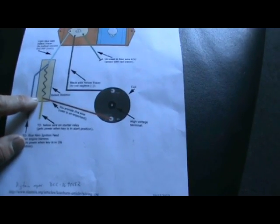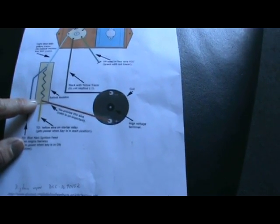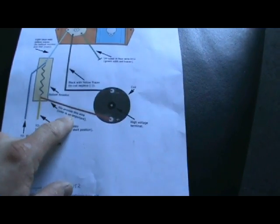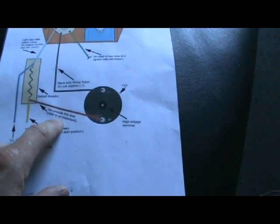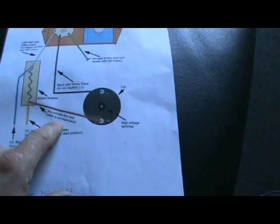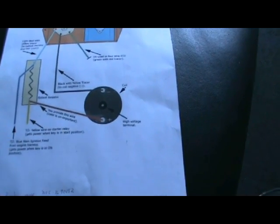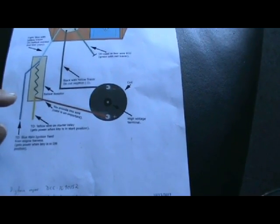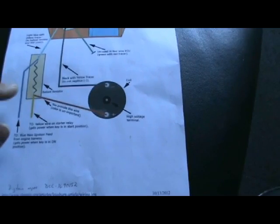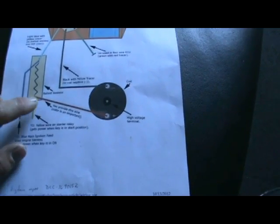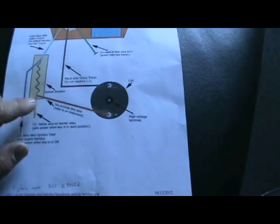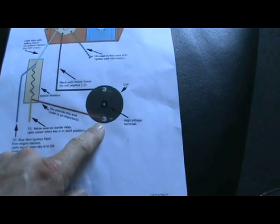The other side of the ballast resistor, if you already have one, this wire to the positive side of the coil is probably already present in your original harness. If you don't have a ballast resistor or you don't have this wire, basically with the other side you will run a wire from it to the positive side of the coil.